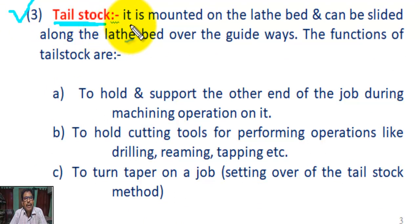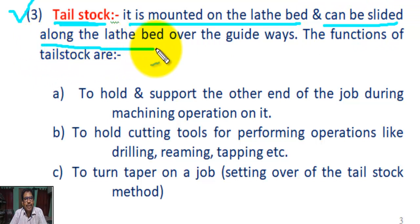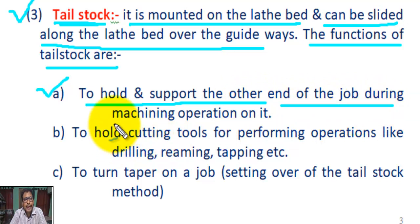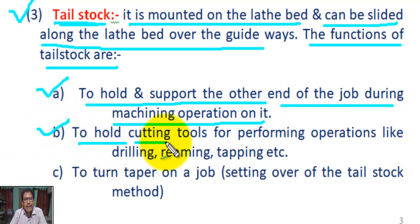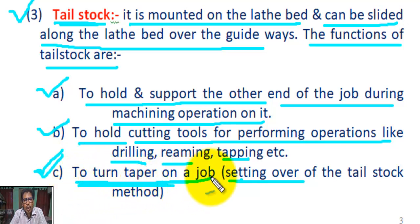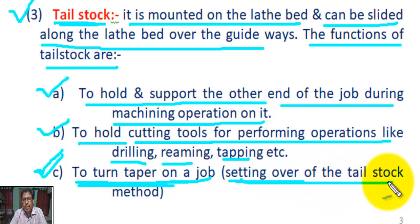Number three: Tailstock. It is mounted on the lathe bed and can be slid along the lathe bed over the guideway. The functions of the tailstock are: A, to hold and support the other end of the job during machining operation; B, to hold cutting tools for performing operations like drilling, reaming, tapping, etc.; C, to turn a taper on a job using the method called setting over the tailstock method.